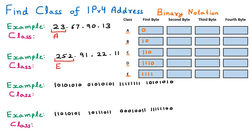We focus on the first byte of the third IP address. Looking at where it starts, the first byte begins with 1 0. Matching 1 0 against the binary notation table, this corresponds to Class B. So this IP address belongs to Class B.